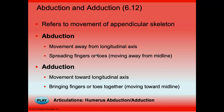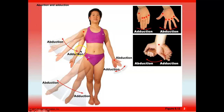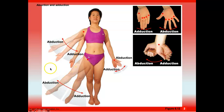Abduction is movement away from the body — like taking your arm and moving it away from your side. If you move your arm toward the body, it's adduction. You can do the same with your wrist and legs. Moving the leg away from the midline is abduction; bringing it back is adduction. You can also abduct and adduct your fingers.